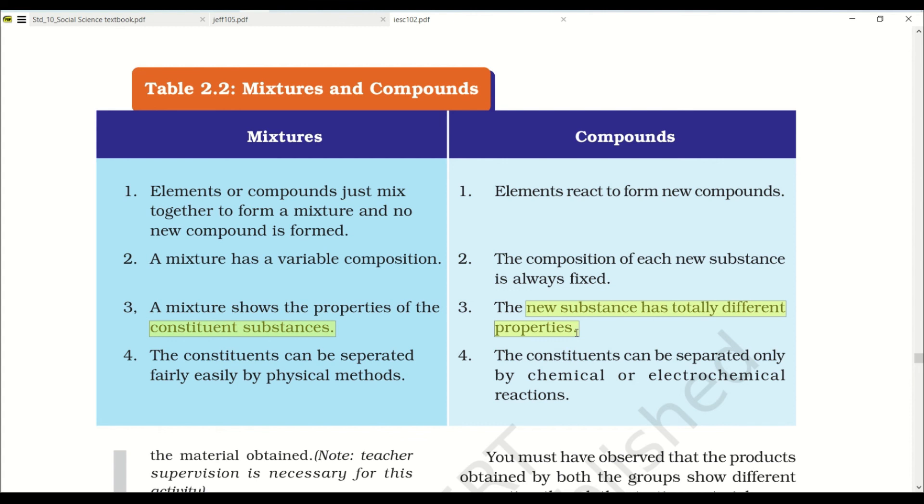Let's talk about water. Water is made up of hydrogen and oxygen. The constituents can be separated fairly easily by physical methods. We have seen all the physical methods for separating mixtures: crystallization, sublimation, filtration, sieving, etc. But for compounds, the constituents can be separated only by chemical or electrochemical reactions. So for separating the elements from the compound, you need special techniques. But for separating constituents from the mixture, you can have certain specific physical techniques that separate the components.